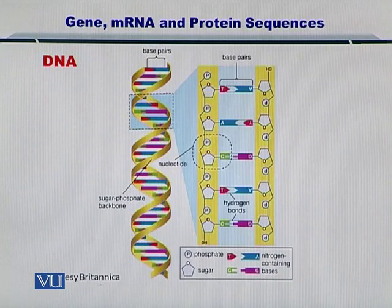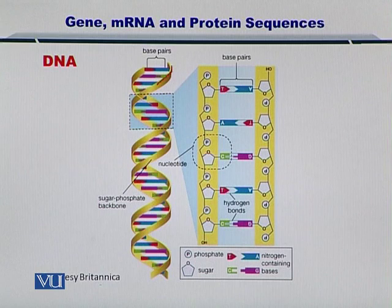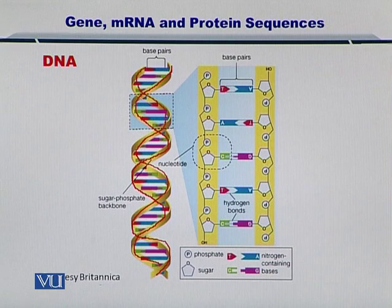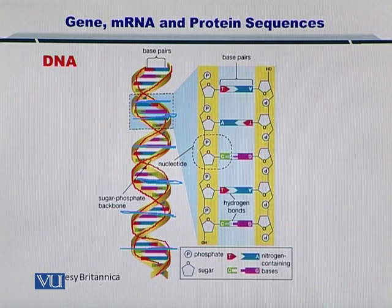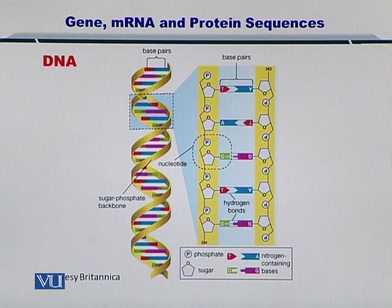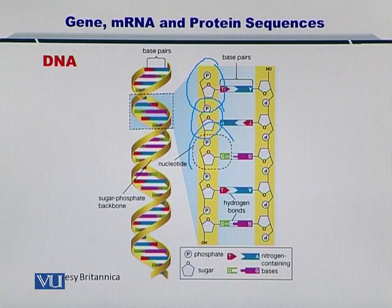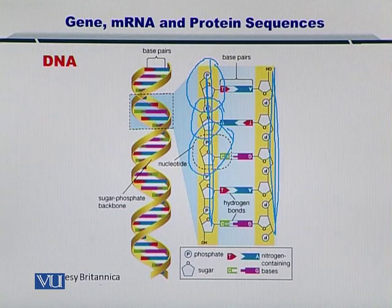If you look at the DNA, then two things are obvious. The first thing is its double helical structure — that is, one strand of nucleotides running in parallel to a second strand. Secondly, these two strands are held together by different base pairs as indicated by the colored lines. If you look at it closely, this resembles a phosphate and a sugar, a phosphate and a sugar, lined upon each other on each strand in the anti-parallel direction.